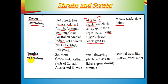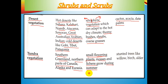Tundra vegetation is found in snow-capped areas of southern Greenland, northern Canada, Alaska, and Eurasia. During the short summer season, when snow melts, it supplies water to the soil, allowing small flowering plants, mosses, and lichens to grow. Together these are called meadows. Trees here show very stunted growth, and species include willow, birch, and alder.